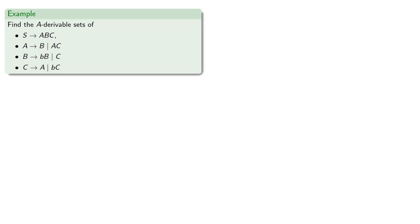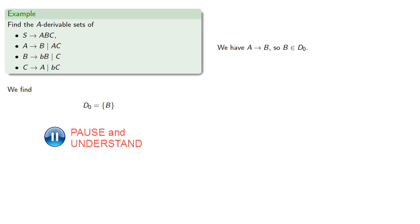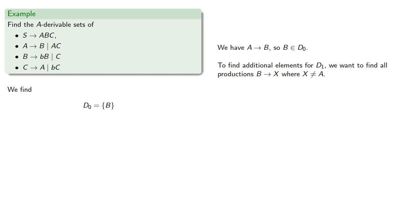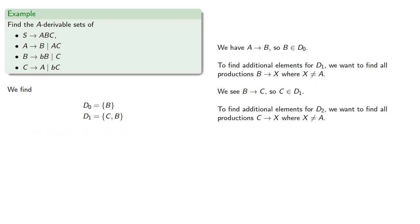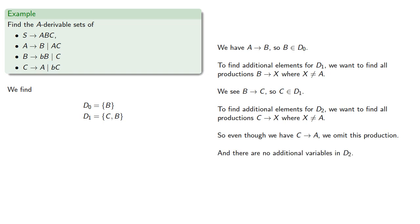For example, if we want to find the A derivable sets for this set of rules: A produces B is our obvious unit production, so B is in our initial set. To find additional elements for D1, we find all productions from B where X is not A. We see that B produces C, so C is our new element in D1. To find additional elements for D2, we find all productions C produces X where X is not A. Even though we have C produces A, we omit it, and there's nothing new that B produces, so D2 equals D1 and we stop. These are all the A derivable variables.